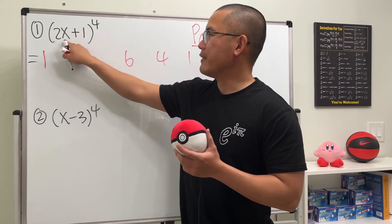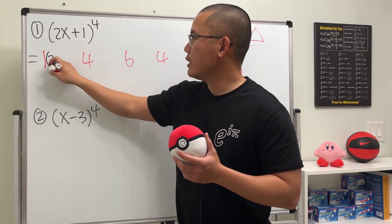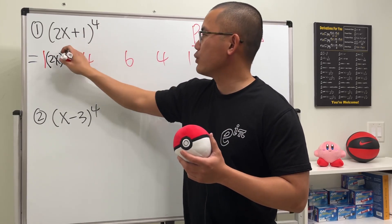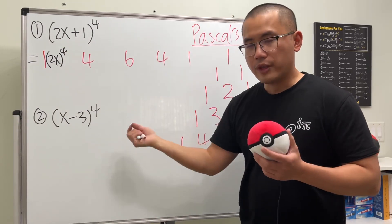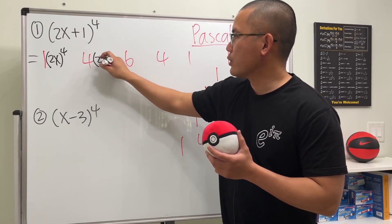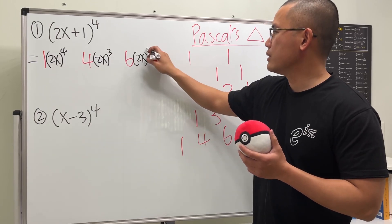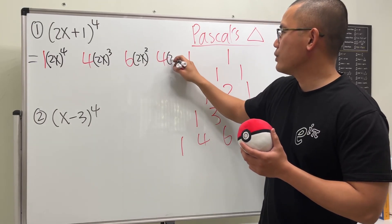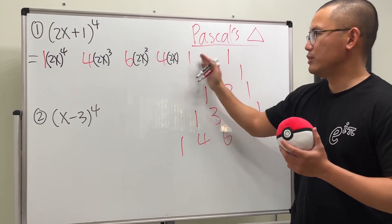Now, here we have the first term being 2x. For this right here, we multiply by 2x and we raise that to the fourth power. And then, for the next term, the power will go down by one. So I will just put down 2x to the third power. And just follow the pattern. 2x to the second power. And then 2x to the first power. And at the end, no 2x. Just this.